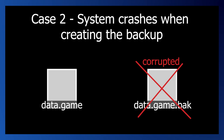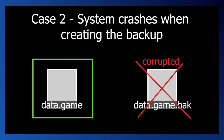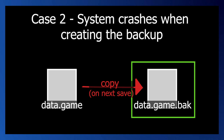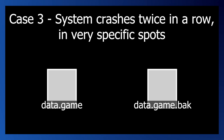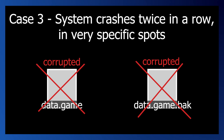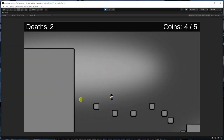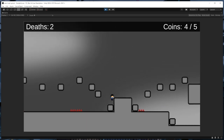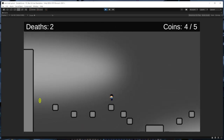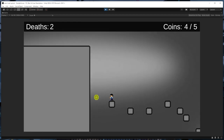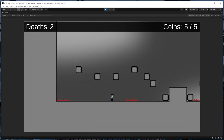If the system crashes when saving and our original data file gets corrupted, we can restore using the backup file and only lose data since the most recent save. Likewise, if the game crashes when creating the backup file, we already have the successfully saved original, and the backup gets overwritten correctly on the next save. The only way we'd lose data completely is if the system crashes twice in a row in two very specific spots — first when creating the backup, then immediately when writing the original — which is extremely unlikely. If you're concerned about this, there are ways to mitigate it further, such as storing multiple backup files.